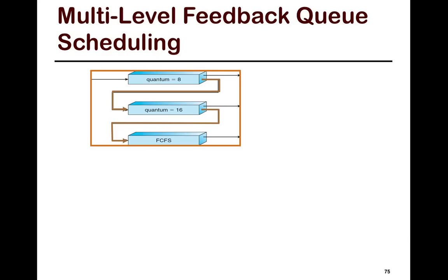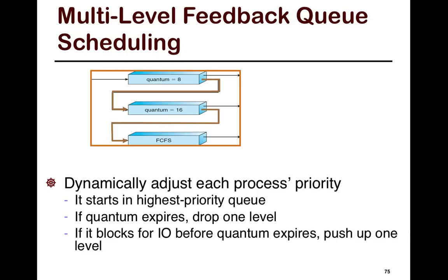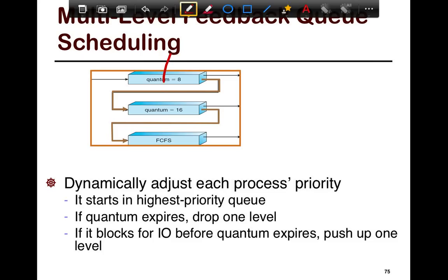You can also have feedback with multi-level queues, and you can dynamically adjust each process's priority. For example, initially a process could be interactive and sit in the highest priority queue. If the quantum expires — meaning it already used its full slice — you drop it one level. If it blocks for I/O before the quantum expires, meaning it didn't use its full quota, you give it a higher priority and push it up one level. So you start with a quantum of 8, giving really low wait times; then if it keeps running, you increase the quantum to 16; and finally you move it to FCFS.